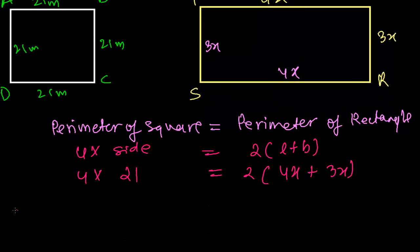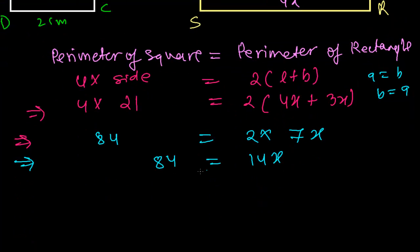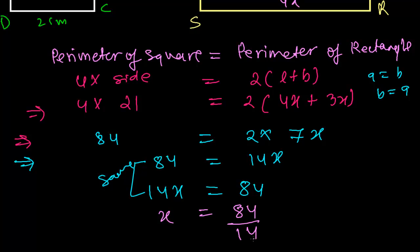Now let's go ahead more. So in the next step, 4 times 21, I can write 84. And here 2 times this 4x plus 3x, that is 7x. Or I can say now 2 times 7x, that is 14x equals to 84. And we know that if a equals to b, then we can write b equals to a also. So that's why if 84 equals to 14x, then I can write 14x equals to 84. Both have the same meaning.